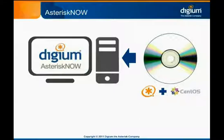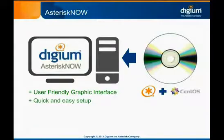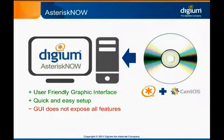AsteriskNow includes a custom version of Linux, a pre-installed version of Asterisk, and a user-friendly graphical user interface for managing your Asterisk configuration. AsteriskNow is a great choice for people who have little Linux experience and want to get Asterisk processing calls in a hurry. It's a quick and easy way to get an Asterisk system up and running. The GUI lets you configure the most common settings, but there are numerous Asterisk configuration options that are not exposed in the GUI. AsteriskNow is good for many typical PBX installations, but isn't as popular a choice for installations that need to be highly customized.